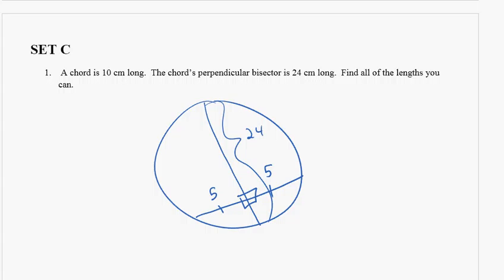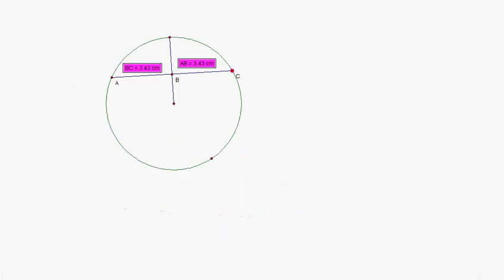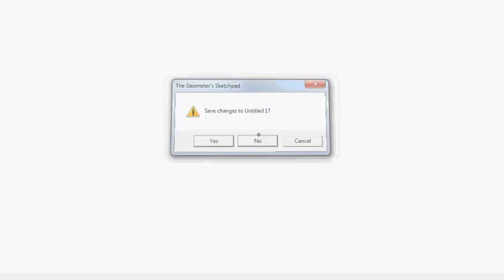If we go to Geometry Sketchpad, maybe make a new document here and we make a circle and we make a chord like we have and we make a perpendicular bisector of that chord. First we can construct a midpoint. Then we construct a line that's perpendicular to this segment through this point.